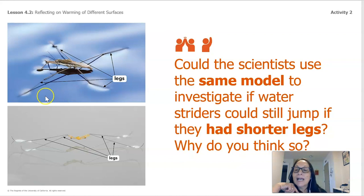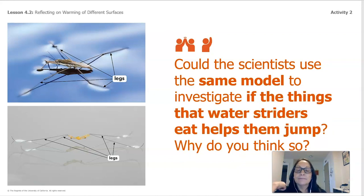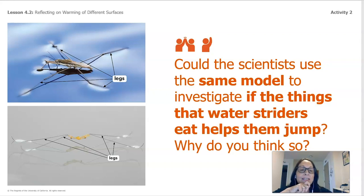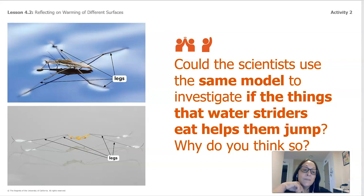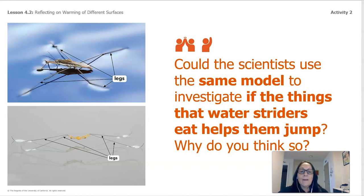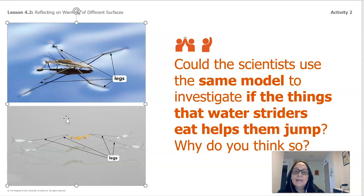The next question is a little more tricky: could the scientists use the same model to investigate if the things that the water striders eat help them jump? The answer is no. The model does not eat or even have a head or body, so they could not feed it different things. In order for that to work, they would have to create a model with a mouth and a head. So a scientist would not be able to use this model for that question.